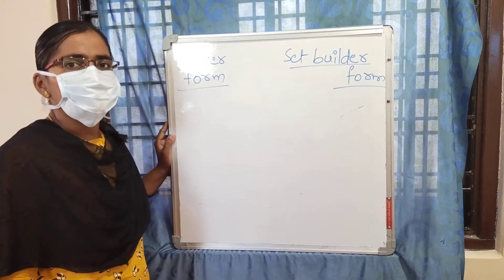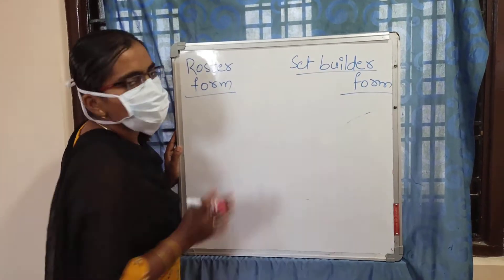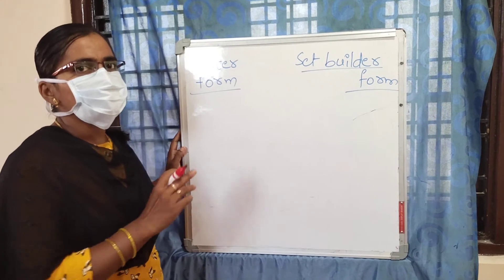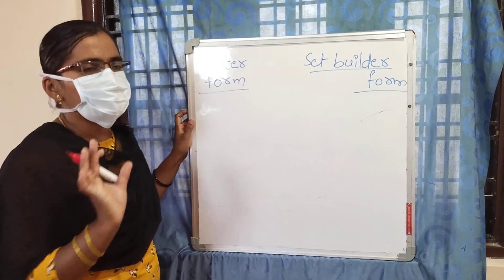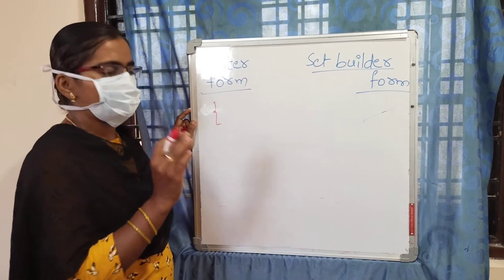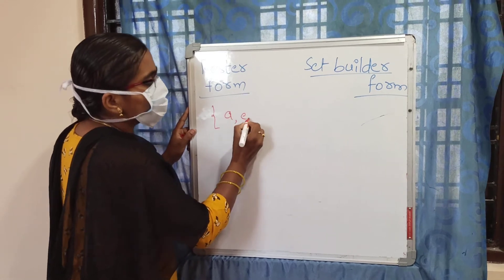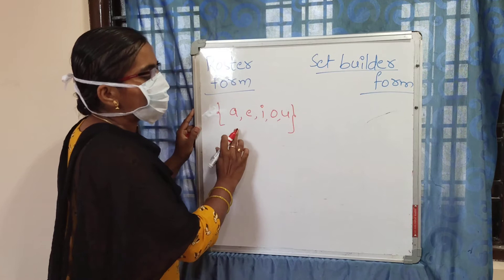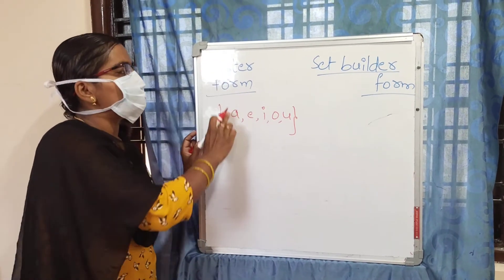These sets we can write in two forms: roster form and set builder form. A simple example to understand this — vowels in the English alphabet. Roster form means we have to write all elements. The elements are a, e, i, o, u. These are the vowels in the English alphabet. This is called roster form.